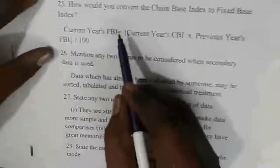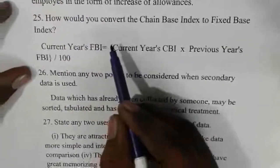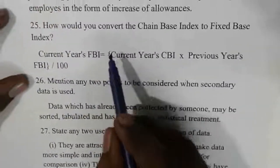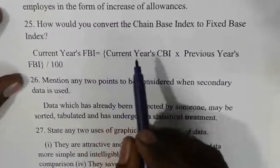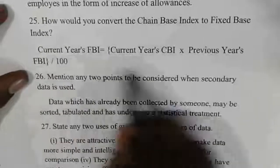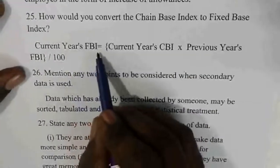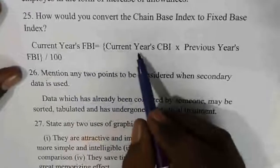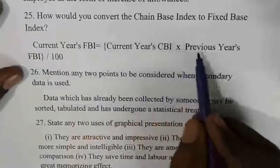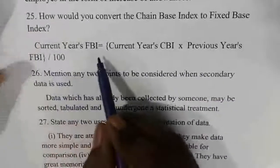There are chain-based index numbers and fixed-based index numbers. The formula for current year fixed-based index equals current year CB multiplied by previous year CB divided by 100.